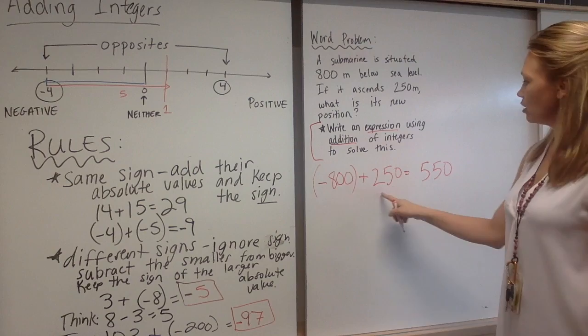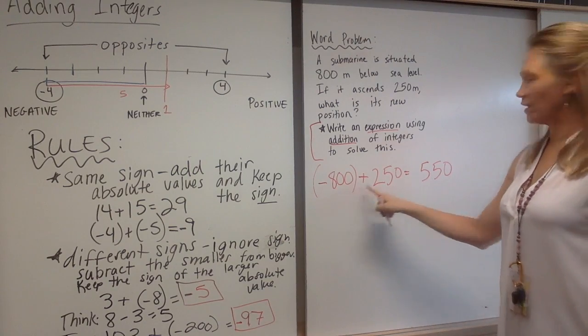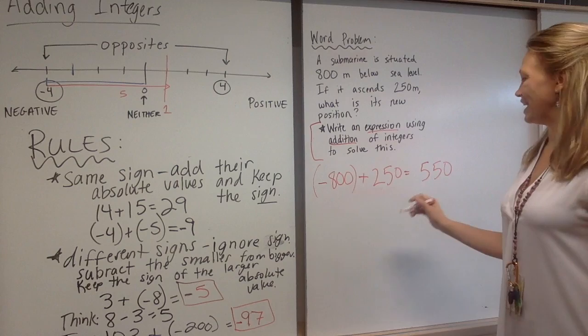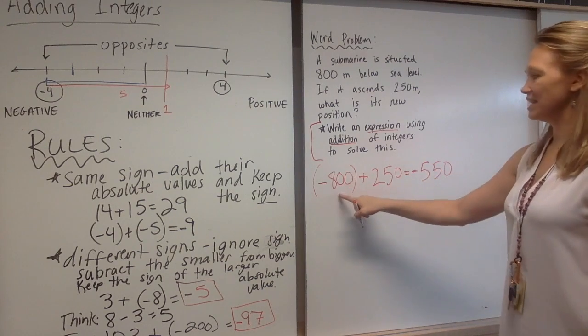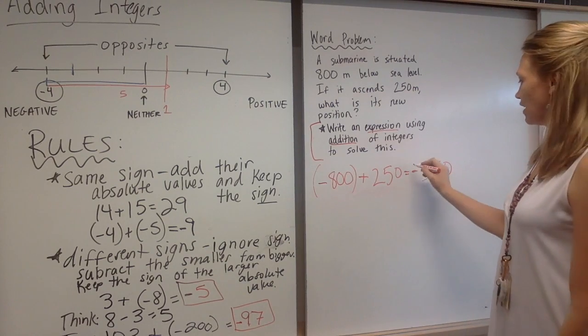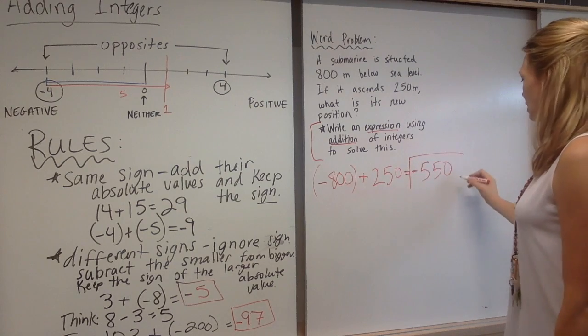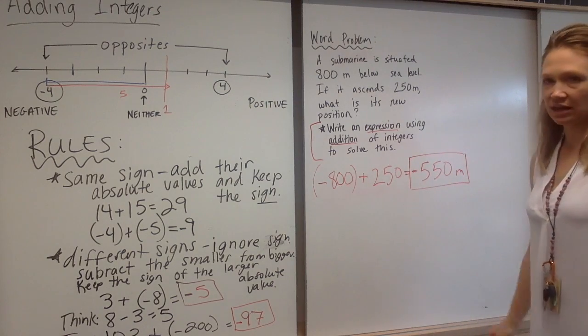And then is it going to be negative or positive? I hope you said negative because this has a larger absolute value and 800 is negative. And then we'll give it some units, meters below sea level.